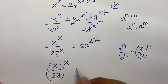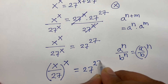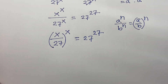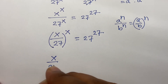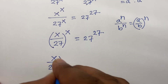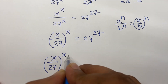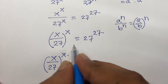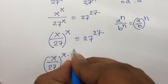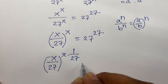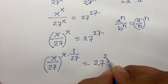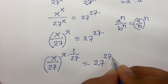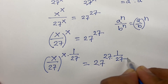The power is common. Now I raise both sides to the power of 1/27. So (x/27)^(x · 1/27) equals 27^(27 · 1/27). On the right side, 27 times 1/27 cancels to give 1.